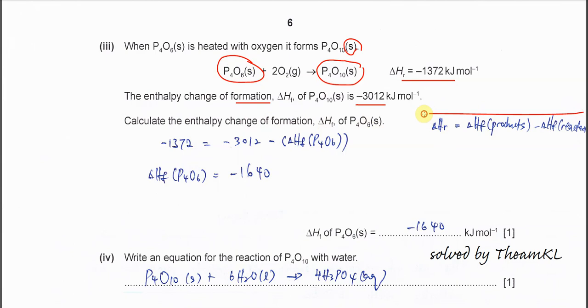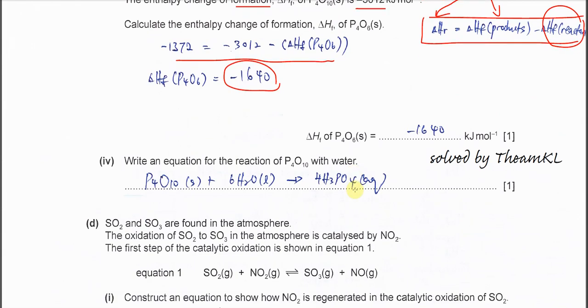In order to get delta Hr, it must be the delta Hf of products minus delta Hf of reactant. In this reaction, the product is P4O10, so you substitute the delta Hf of P4O10 here. The delta Hr is already given, substitute this one here, then you find this one. The reactant is P4O6, so you get this. Rearrange, then you get negative 1640.